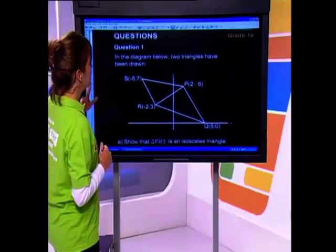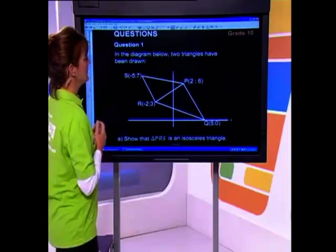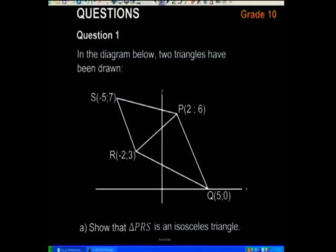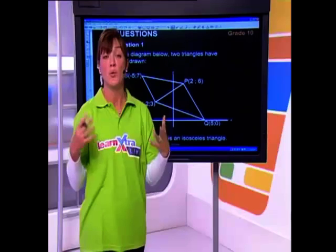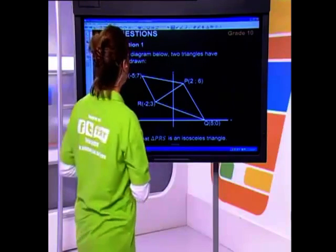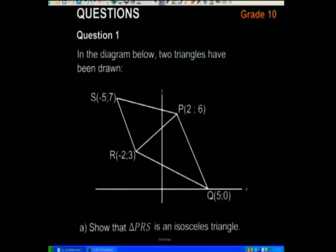This is a question which looks fairly typical for grade 10s. This is the kind of thing you're going to start expecting to see in terms of the questions you will be asked. We have a diagram showing two triangles: triangle SRP and triangle PRQ. We can quite clearly see what each of the coordinate points are — those are all the points of each of the letters.